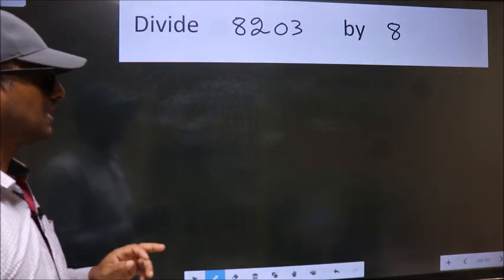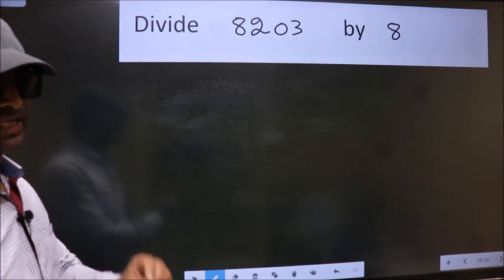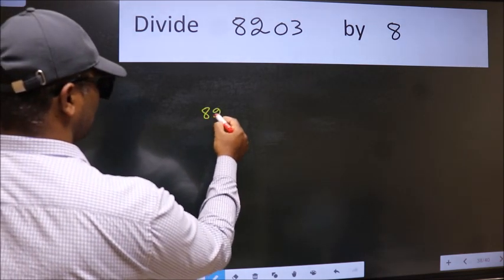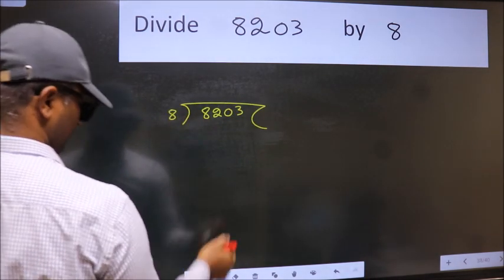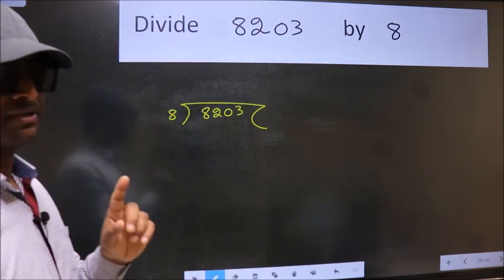Divide 8203 by 8. To do this division, we should frame it in this way. 8203 here, 8 here. This is your step 1.